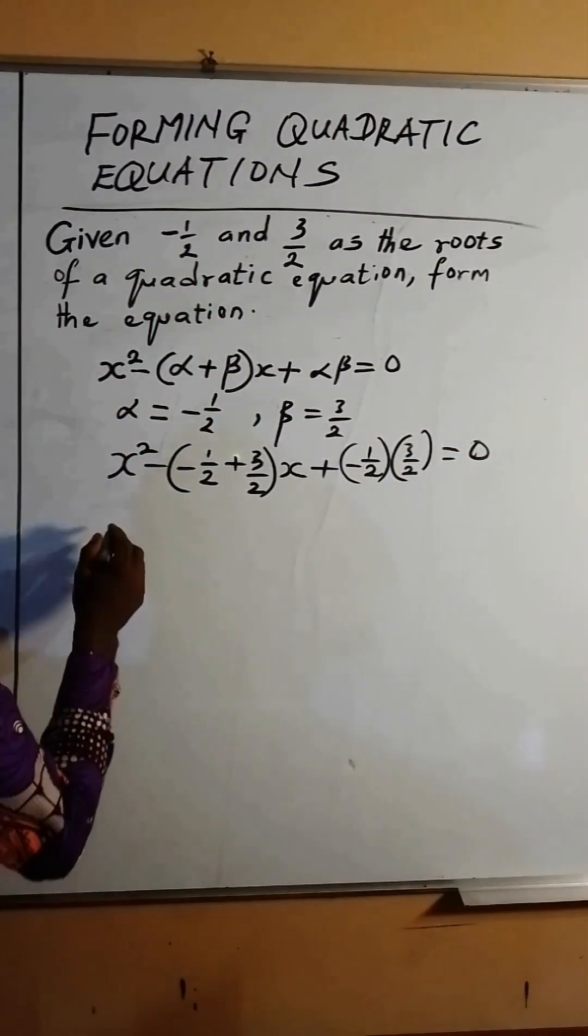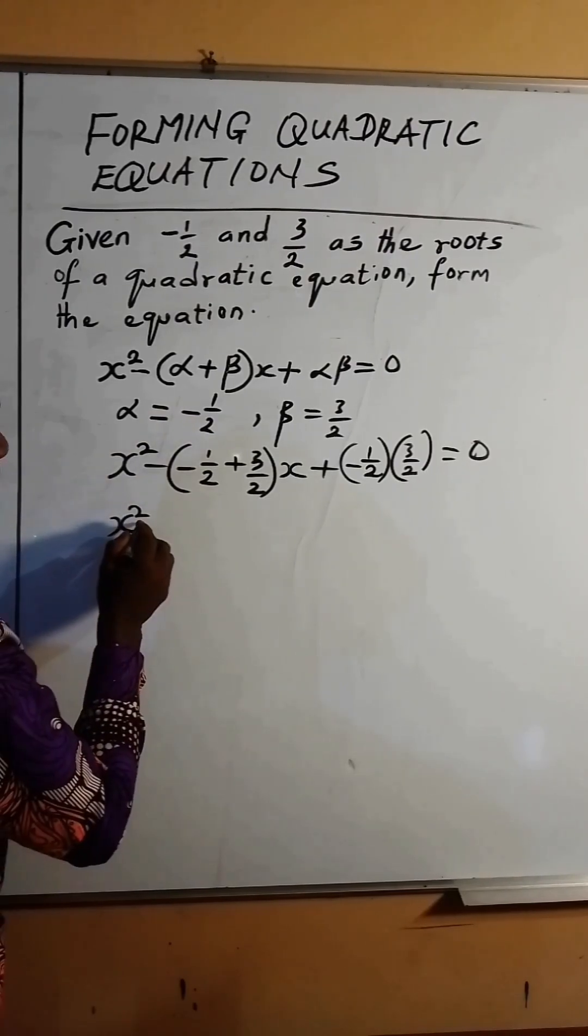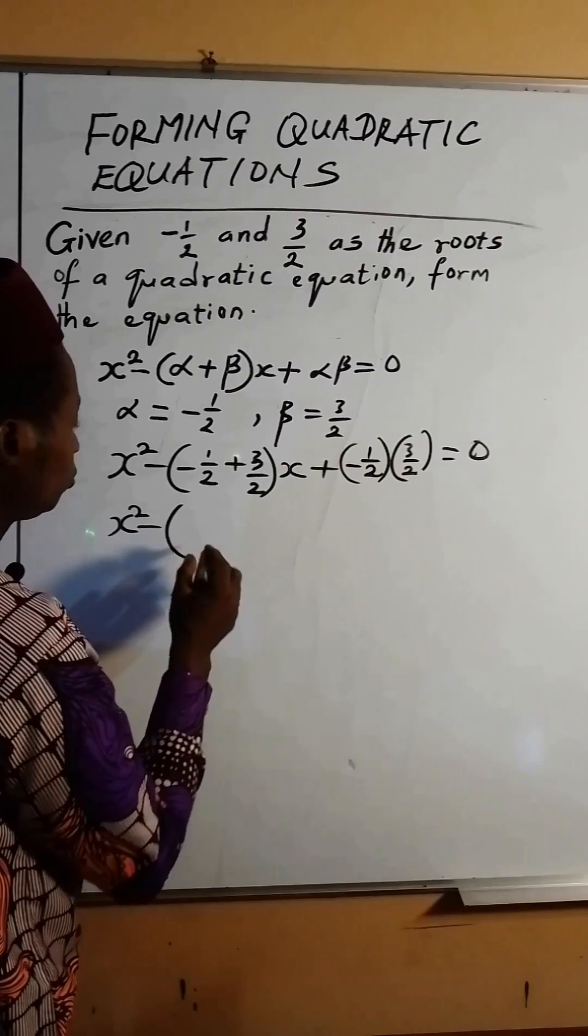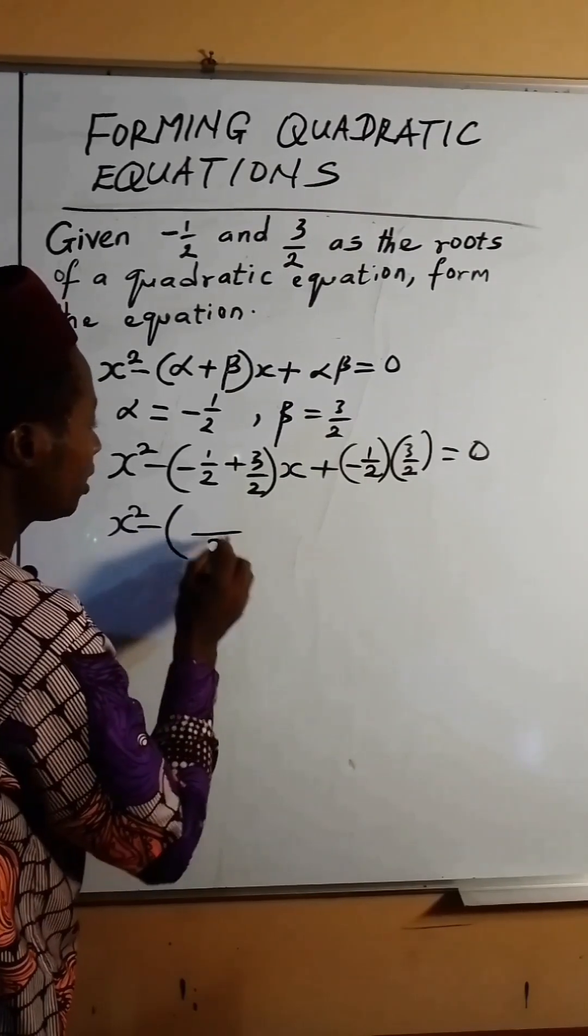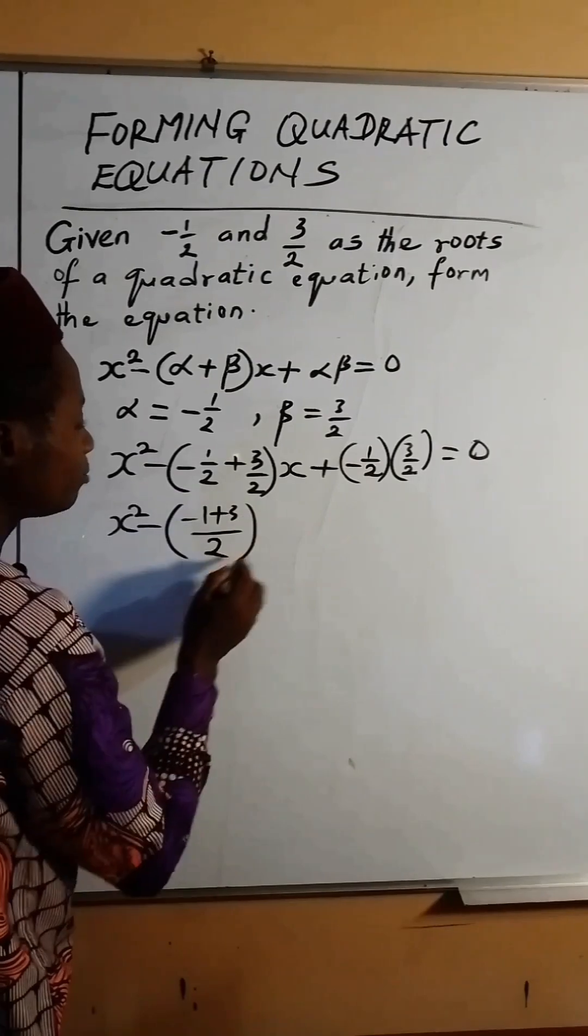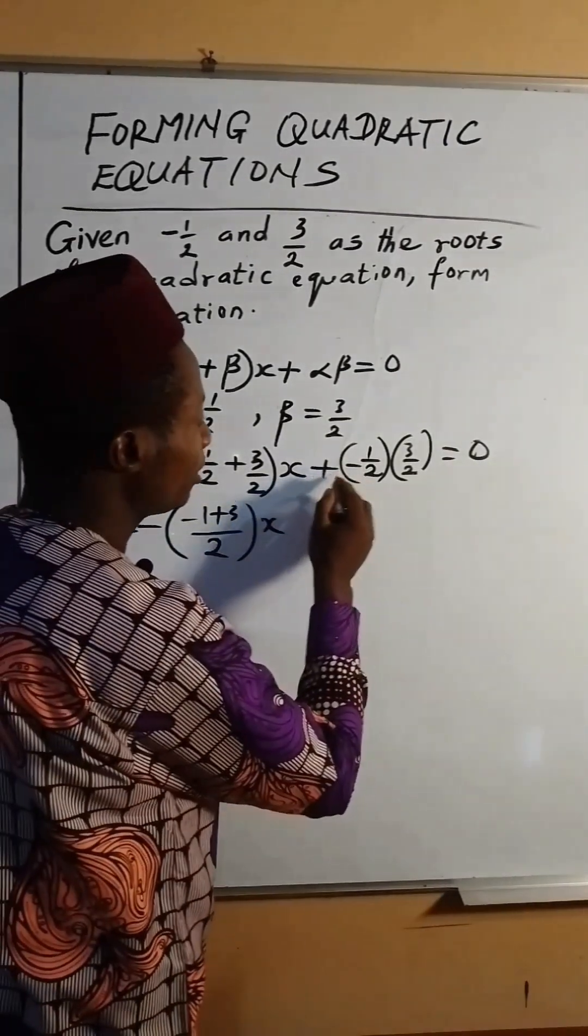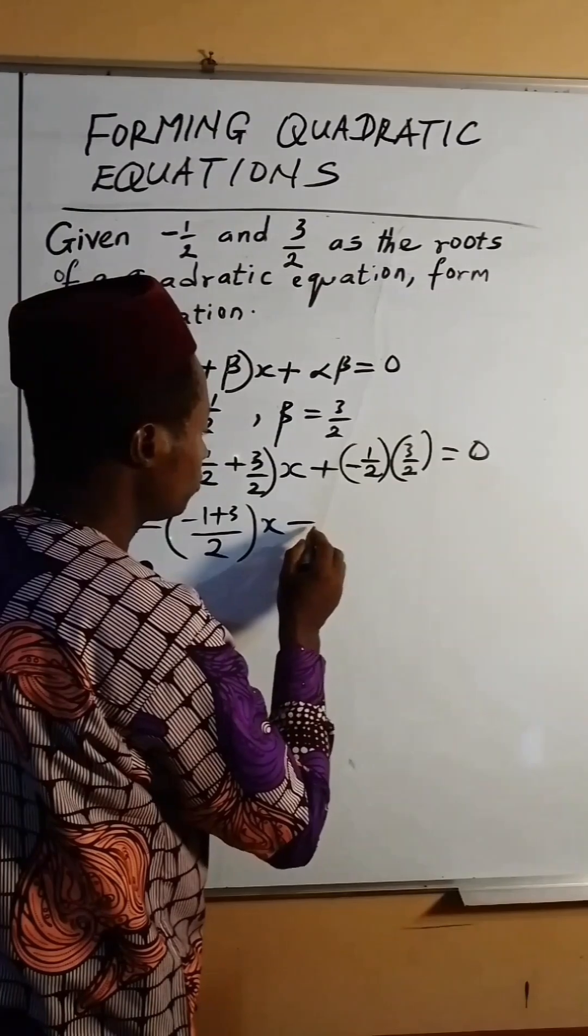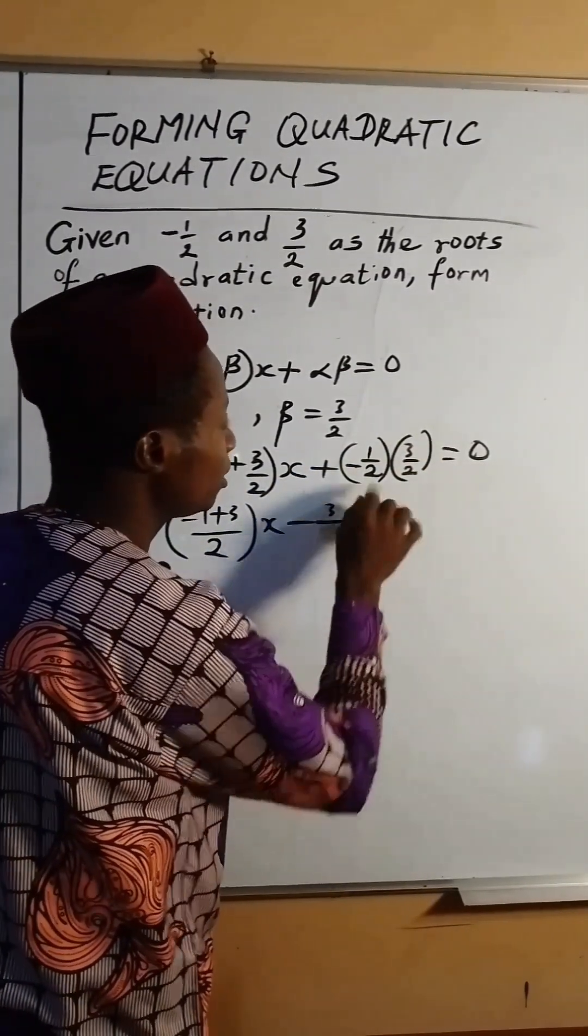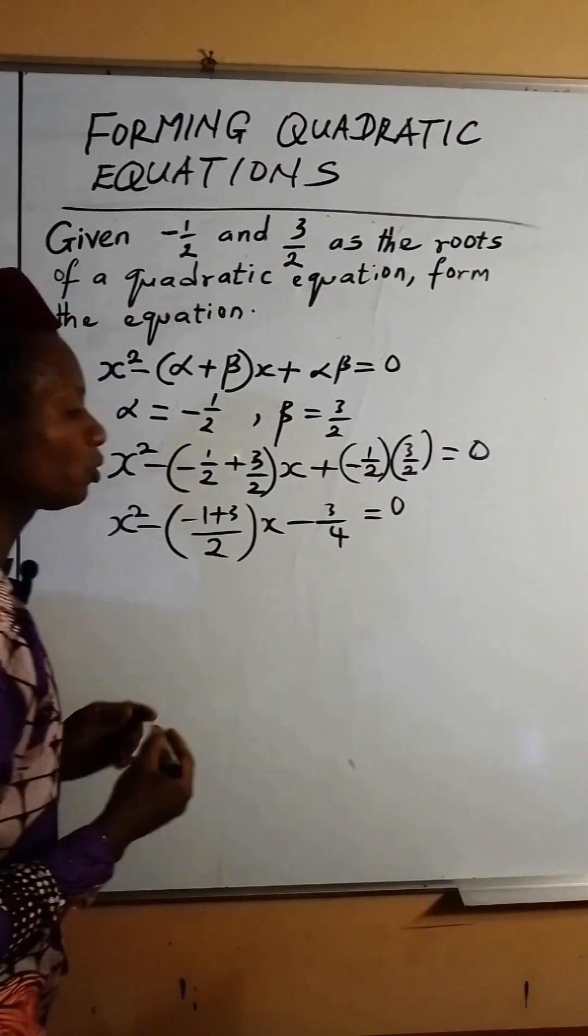So let's simplify the brackets. If we do that, we'll have x squared minus open brackets. This is 2 and 2, so which is 2 here. Then minus 1 plus 3 inside the brackets. And here we have x. This is minus times plus, which is minus. 1 times 3 is 3, 2 times 2 is 4, and this equals 0.